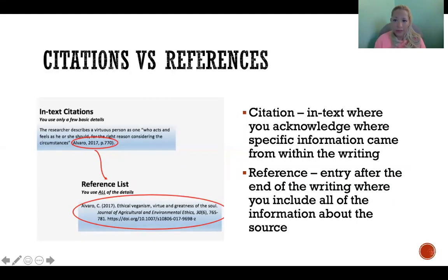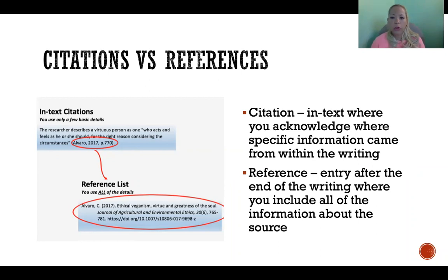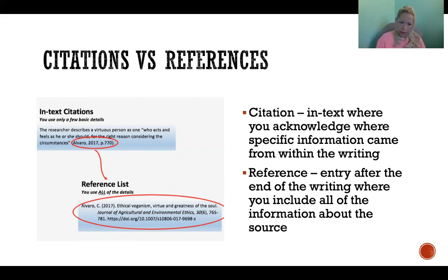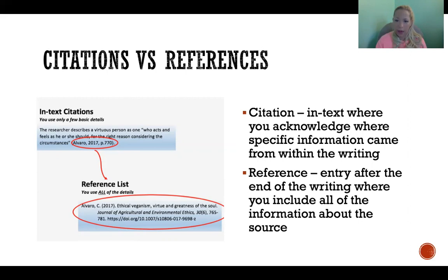First I want to talk about what is a citation and what is a reference. Citations are in-text, and they're there to show and acknowledge where you got the information that you are discussing. You use in-text citations whether it is a direct quotation or you have paraphrased the information and wrote it in your own words. You still need to acknowledge where you got the information, even if you wrote it in your own words. In-text citations include the last name and date, and if it's a direct quotation, then you would also include the page number.